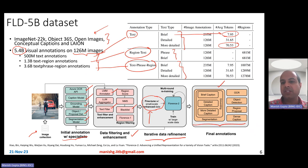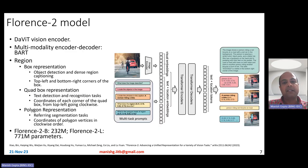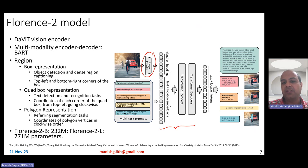The FLD-5B dataset has various kinds of annotations: grounding-based text annotations with brief, detailed, and more detailed captions, as well as OCR annotations, object detection, region proposal, and dense caption annotations. The Florence 2 model architecture is super simple — it contains an image encoder and a transformer encoder-decoder network. That is all that is there in the Florence 2 model. No special components — the model architecture is super simple.